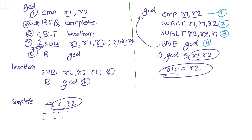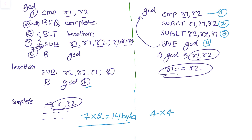Now let's compare the code size. In Thumb mode we have 7 instructions, and each instruction is 2 bytes, so the total is 14 bytes. In ARM mode we have 4 instructions, and each instruction is 4 bytes, so the total size of the ARM code is 16 bytes.